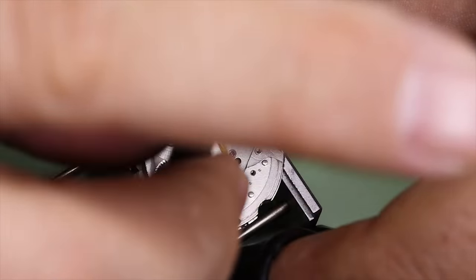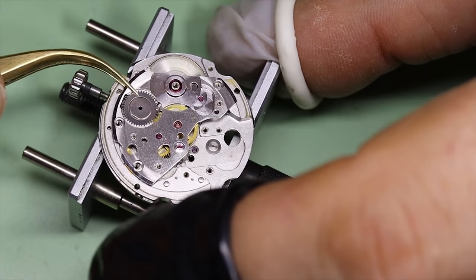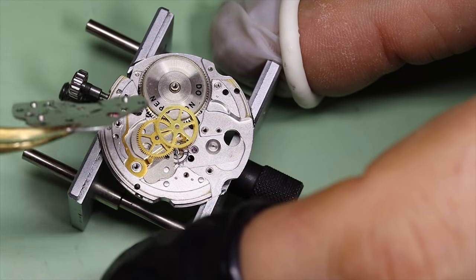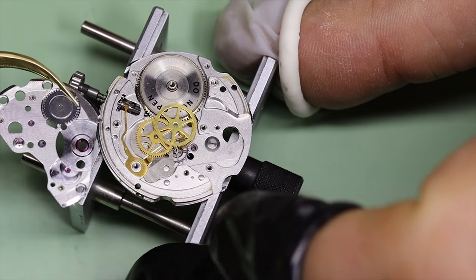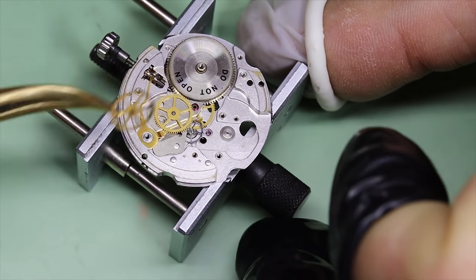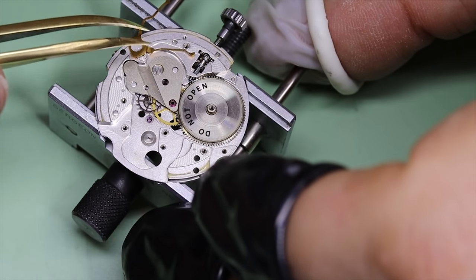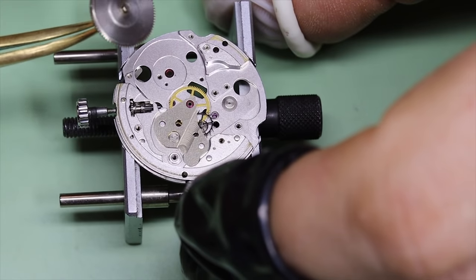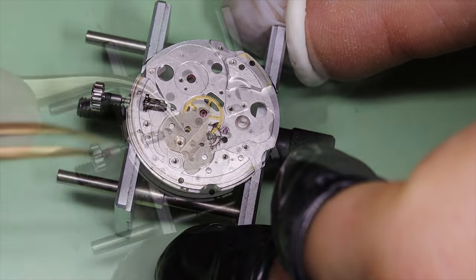It also means that the seconds hand moves five times in one second because every time the pallet fork moves left or right, it lets the escape wheel escape half a tooth. Every time the escape wheel rotates a little bit, the rest of the wheels in the train also rotate, so the seconds hand will move slightly. In an 18,000 bph movement, the second hand moves five times per second, which looks a little bit stuttery to the eye.